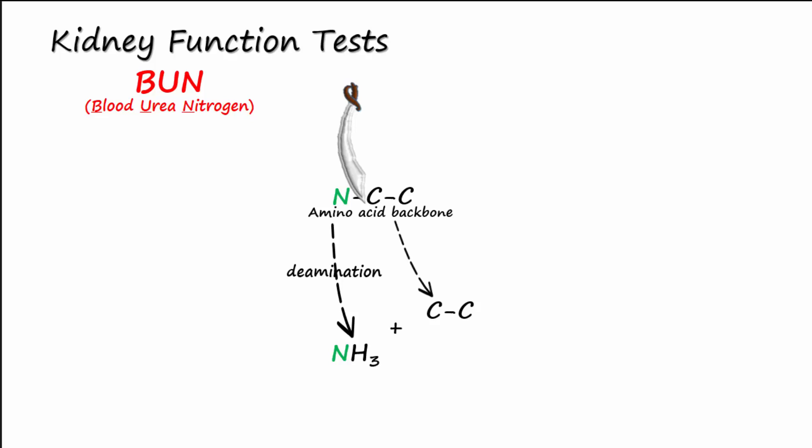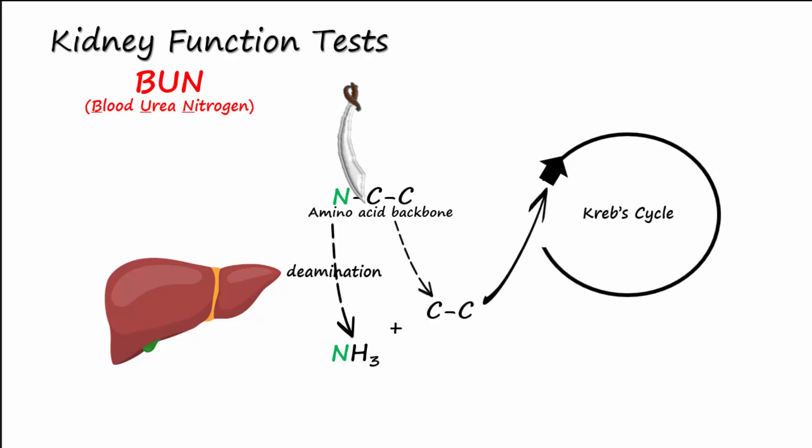This primarily occurs in the liver. The deamination also yields a leftover 2-carbon molecule that can be either recycled or broken down further by entering the Krebs cycle and oxidized to make ATP.